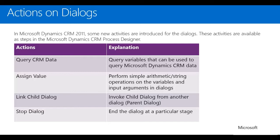When creating dialogues, you'll notice a lot of similar functionality to Workflow. There are four new options you'll see: Query CRM Data, Assign Value, Link Child Dialogue, and Stop Dialogue. Query CRM Data allows you to query data within CRM — for example, a prompt page could say 'enter the last name of the contact,' and it will go out and query your contact database and return anyone with that last name. Depending on prompts and responses, you can even trigger workflows or update the system after the dialogue is completed.